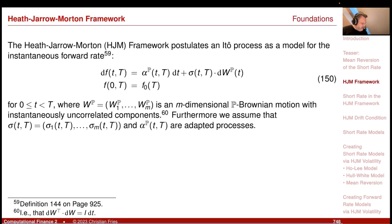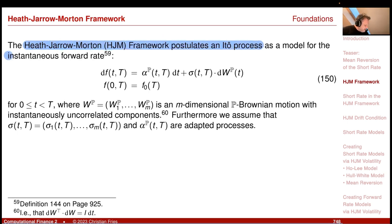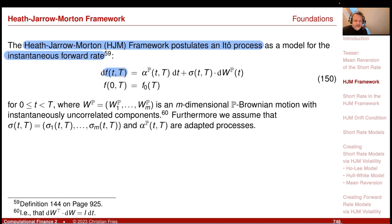We can understand this effect if we study the Heath-Jarrow-Morton framework and how the model families embed in it. The Heath-Jarrow-Morton framework postulates an Ito stochastic process as a model for the instantaneous forward rate f. This is the time-continuous analog of our discrete forward rate L_k(t), where the maturity parameter T takes the role of the index k. We have an Ito stochastic process driven by an M-dimensional Brownian motion.